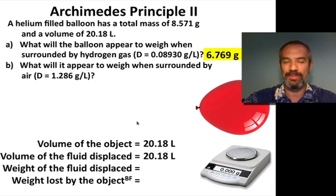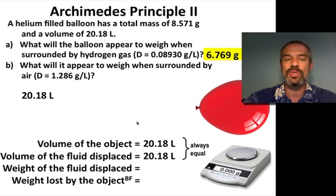And, that will be the volume of the fluid displaced, the air displaced, those will always be equal. Same idea, we're going to take that 20.18 liters, multiply it, this time times the density of air, 1.286 grams per liter,